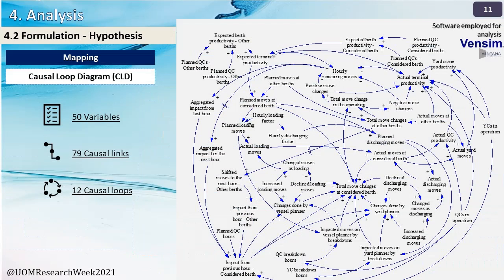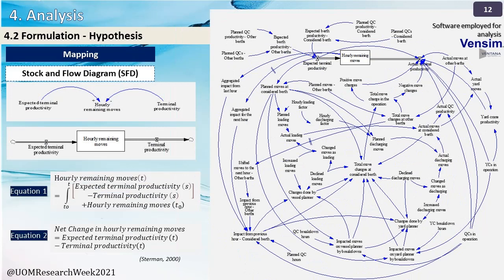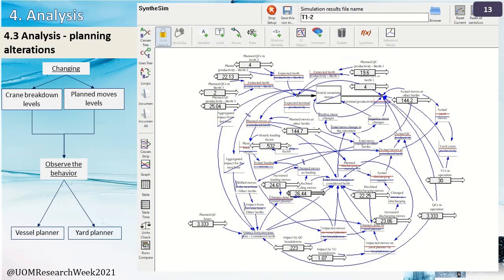After carefully evaluating the initial data as quantitative inputs and the expert interviews and planner manuals as qualitative inputs, the causal loop diagram was created. It explains how each variable influences one another, creating loops. This diagram includes 50 variables which represent 79 causal links explained through 12 causal loops. For the stock and flow diagram, we identified remaining moves as the main stock of the system, and expected and actual productivities as the two rates that change the stock. Mathematically, this is represented through an integral equation. We used the synthesis tool in VenSim and changed the inputs to observe behaviors.